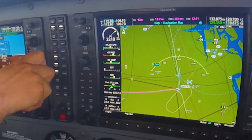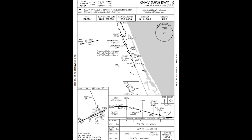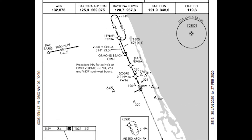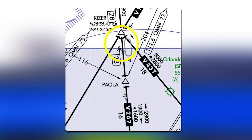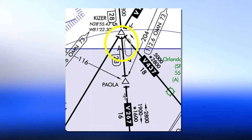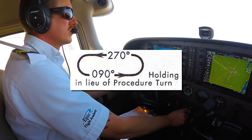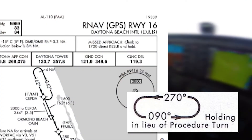There are two types of holds: published and unpublished. Published holds are depicted on en route charts or instrument approach plates. En route holds are depicted on the low en route chart in gray and are used when sequencing traffic arriving to airports before joining the approach.